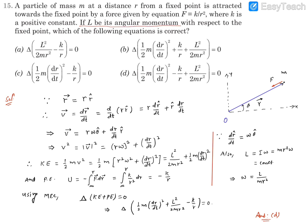If L be its angular momentum with respect to the fixed point, which of the following equations is correct? In these equations, if you look carefully, it's like change delta of something is claimed to be zero. So we need to see which quantity does not change and then we try to relate them.